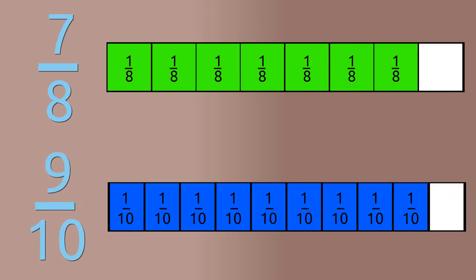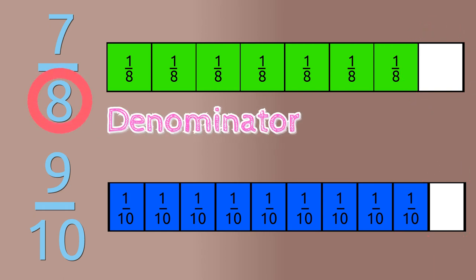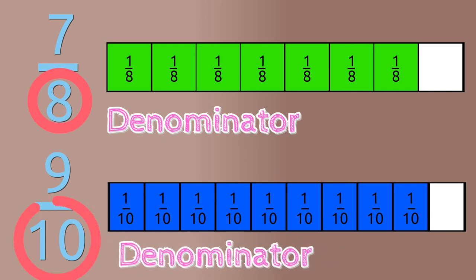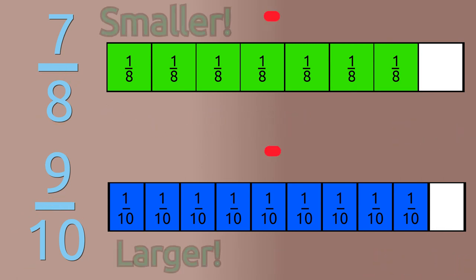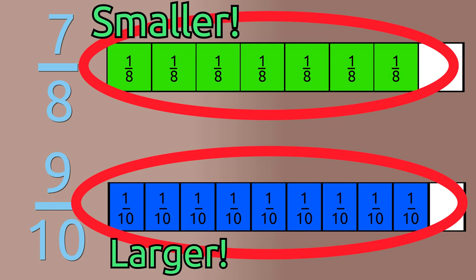This leaves seven-eighths and nine-tenths. We know that both fractions are one fractional part away from one whole. However, since seven-eighths has a denominator of eight and nine-tenths has a denominator of ten, we know that the fractional part missing in seven-eighths is larger than the fractional part missing in nine-tenths, making seven-eighths the smaller fraction from the two.